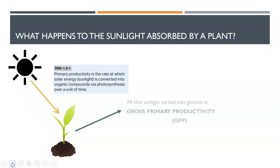We call that the gross primary productivity. All that sunlight getting converted into glucose is the GPP — gross primary productivity. Sunlight goes in, glucose comes out — that's our GPP.